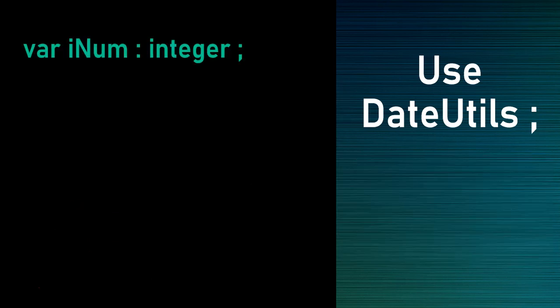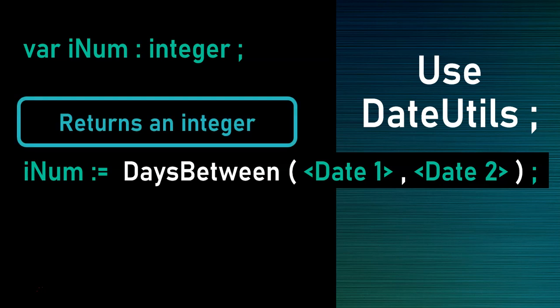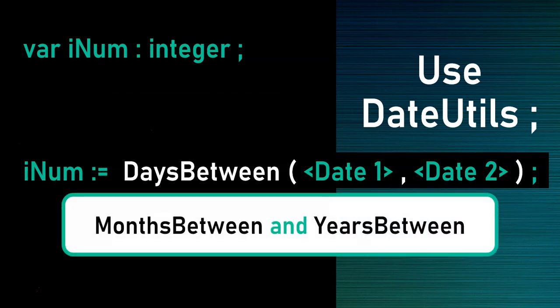Another function that returns an integer is DaysBetween. Give it two dates and it returns the number of days between them — the same as subtracting two dates, except the result is stored as an integer rather than a real. There's also MonthsBetween and YearsBetween, so if you want to work out how many months or years there are between two dates, you can use those functions directly, which is really useful.